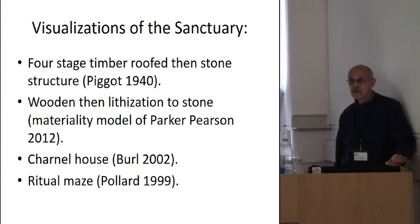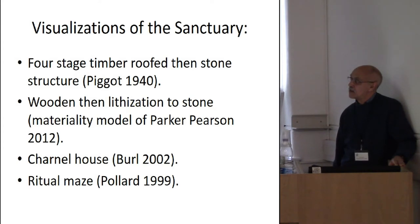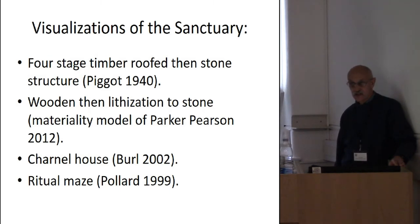We have a number of approaches in the literature about how to understand the sanctuary. Early on in 1940, Piggott suggested it was a four-staged timber roof and then stone structure. Mike Parker Pearson considers it wooden first and then lithicisation to stone later on. Burl mentioned it was a charnel house according to antiquarian testament, and Josh Pollard suggests it is a ritual maze.